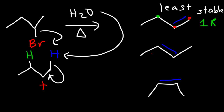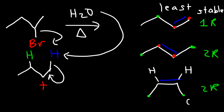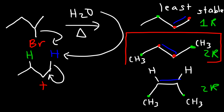For the trans alkene, there are two carbon atoms attached to the double-bonding carbons, so it's a disubstituted alkene with two R groups. The same is true for the cis alkene — it's also disubstituted. The trans alkene is more stable than the cis alkene because you want the bulky groups to be far apart from each other. So the trans alkene is the major product, and the other two are minor products.